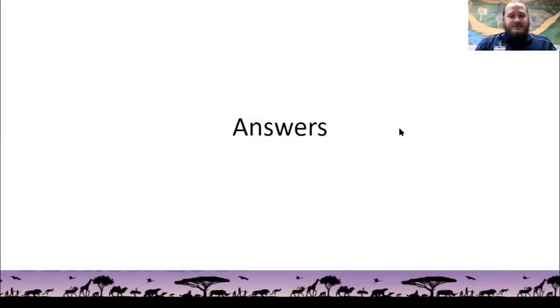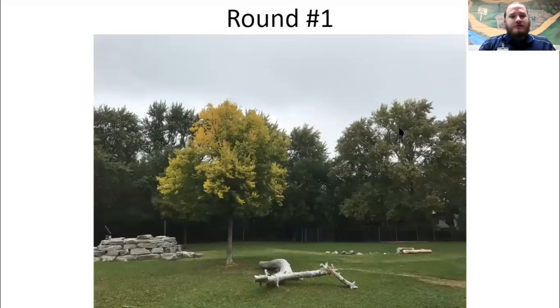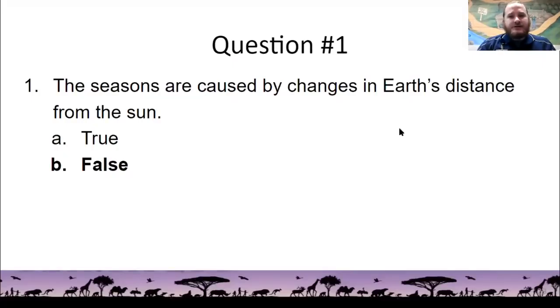All right, it's time for the answers. So round one. Remember, these are worth one point each, if you get them right. The seasons are not caused by changes in Earth's distance from the sun. They're actually caused by the fact that the Earth is tilted on its axis. And so at different times of the year, some parts of the planet get more or less sunlight.